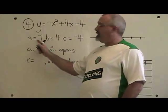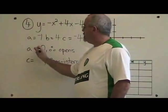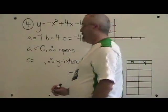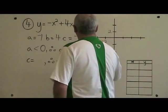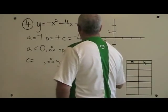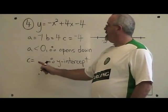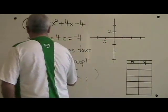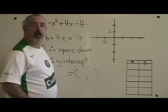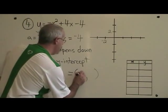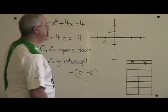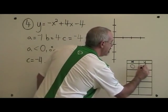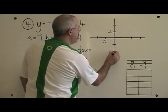a is negative 1, which is less than 0. Therefore, the parabola opens downwards. c equals negative 4, therefore our y-intercept is (0, negative 4). Let's put this in our table: (0, negative 4), and on our graph.